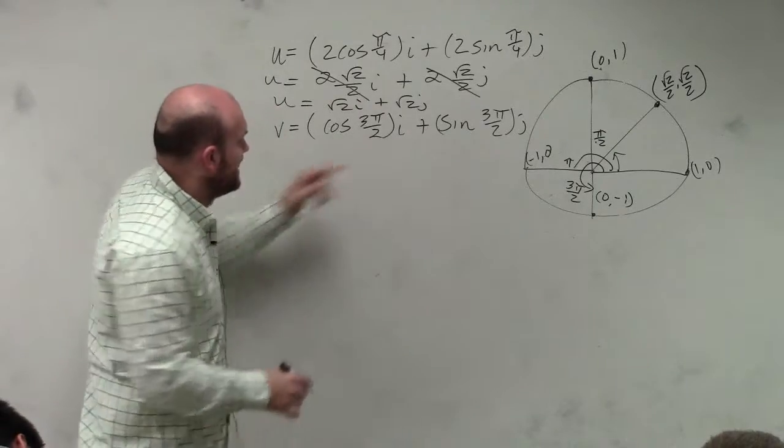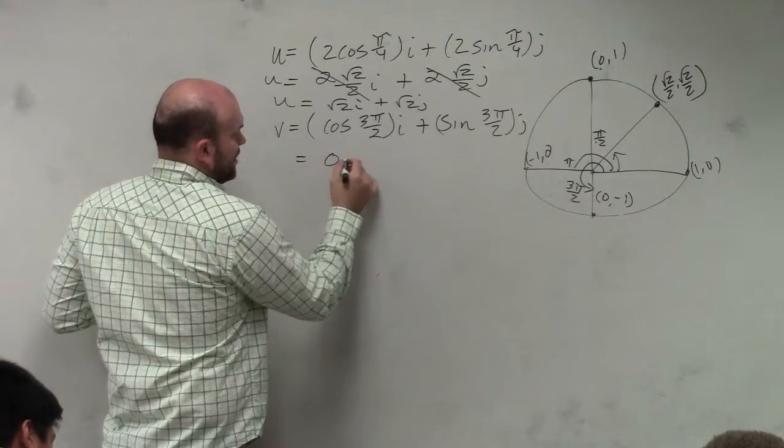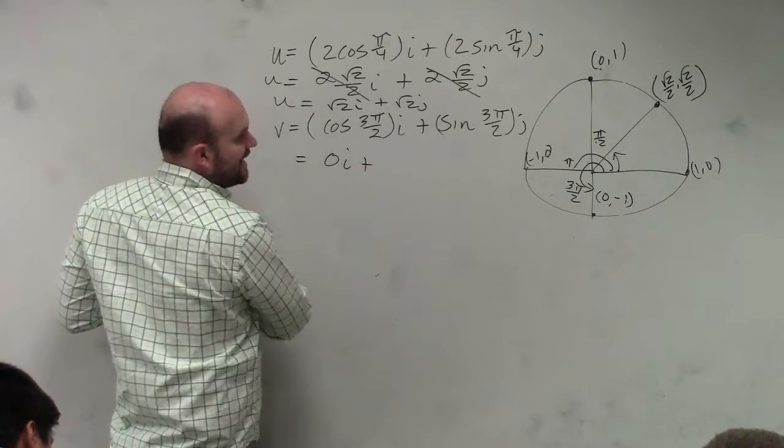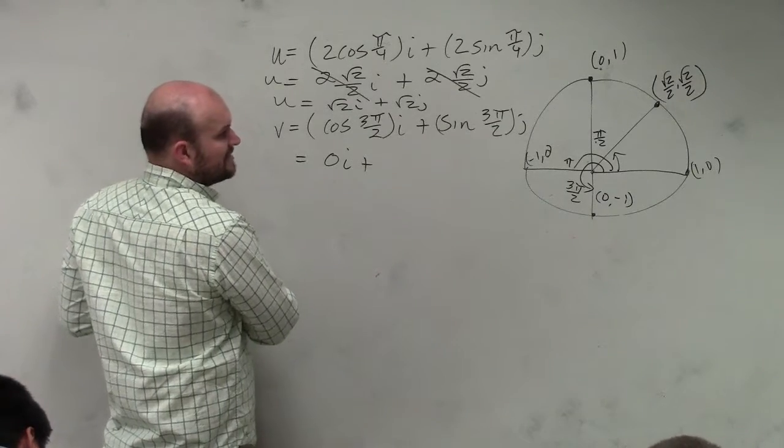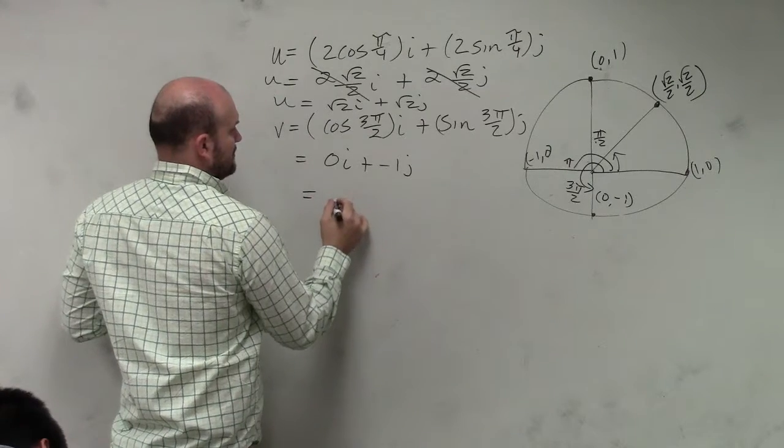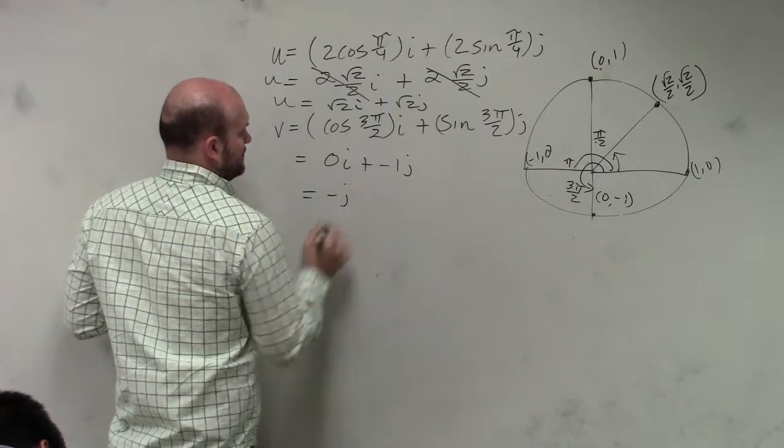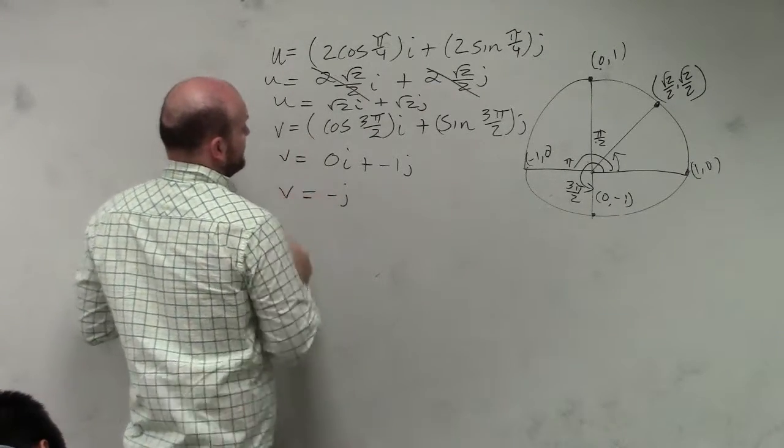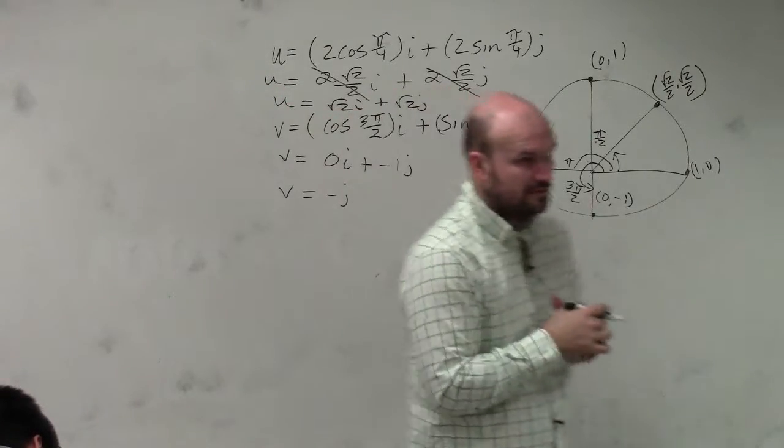So cosine of that is 0, plus sine of that is going to be negative 1, which is really negative j, is your v, is my v vector. OK?